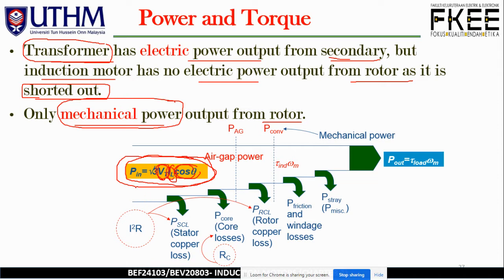Once we have calculated P_in, we move on to the first losses - namely P_SCL, the stator copper loss, which occurs at the stator winding. Then second, we have the core losses P_core, which occur at R_C. And in between the core losses and the stator copper losses, we have the air gap power.